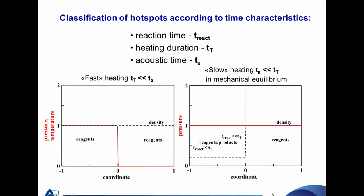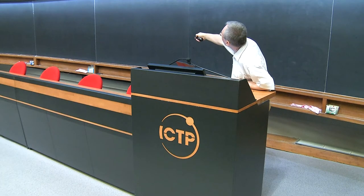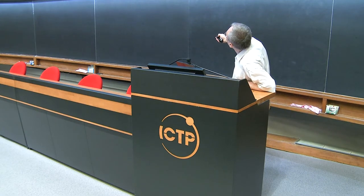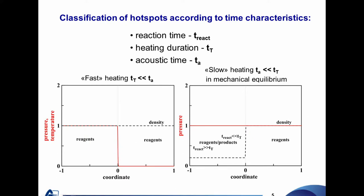Two major types of hot spot: fast heating produces high pressure and high temperature at the boundary between reagent material and hot spot, with density remaining constant — isochoric heating due to very fast energy input. The other type is slow heating in mechanical equilibrium: low density but very high temperature, with constant pressure.